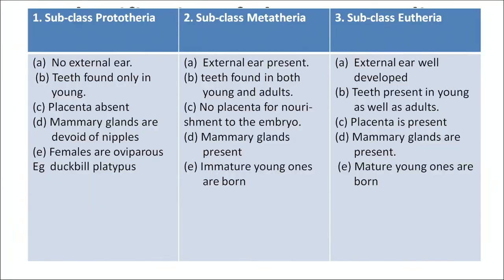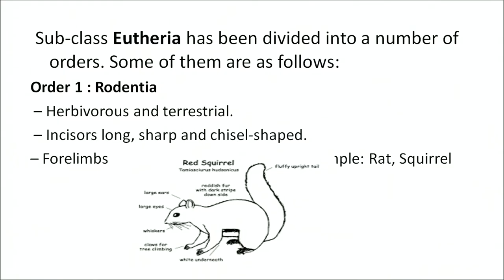Mammalia is further divided into three subclasses: Prototheria, Metatheria, and Eutheria. Subclass Eutheria is divided into further orders. The first order is Rodentia — herbivorous and terrestrial animals. Incisors are long, sharp, and chisel-shaped. Forelimbs are shorter than the hind limbs. Example: rat and squirrel.